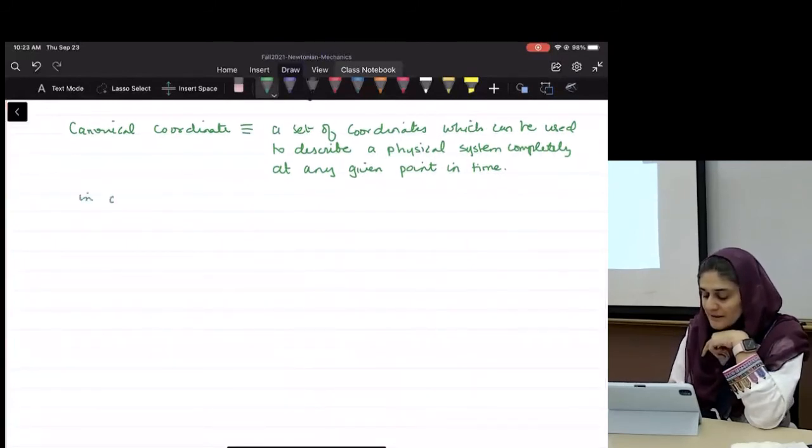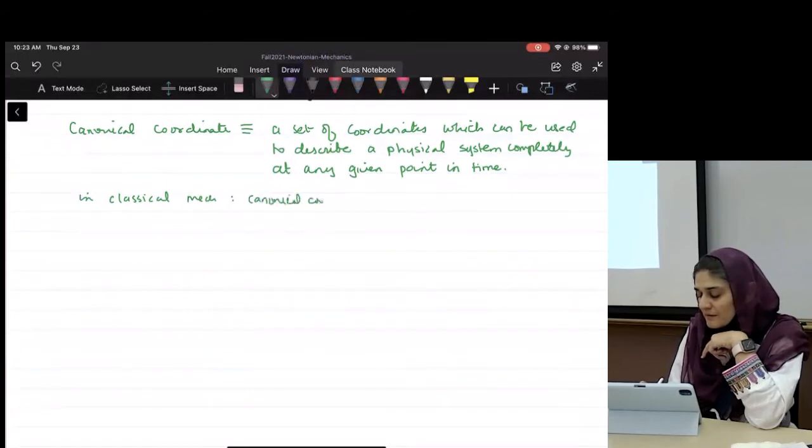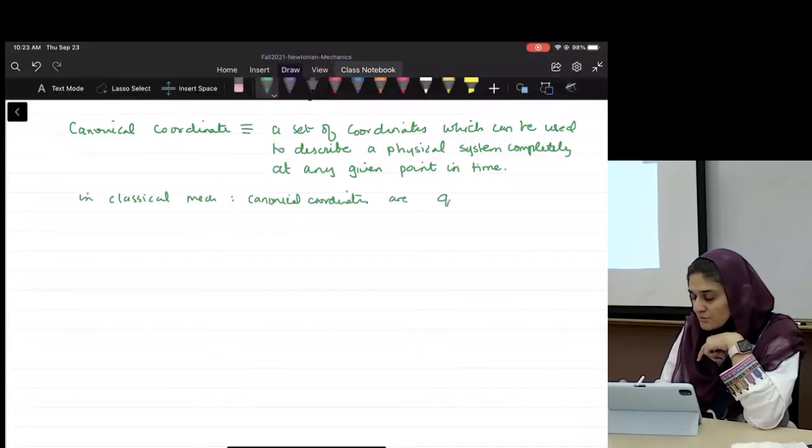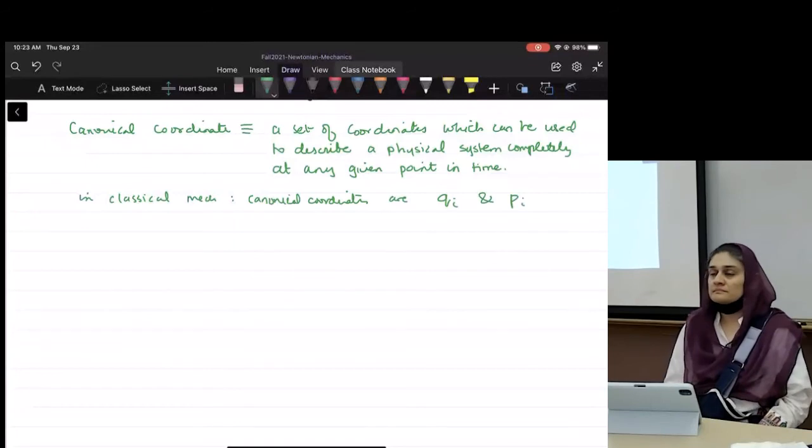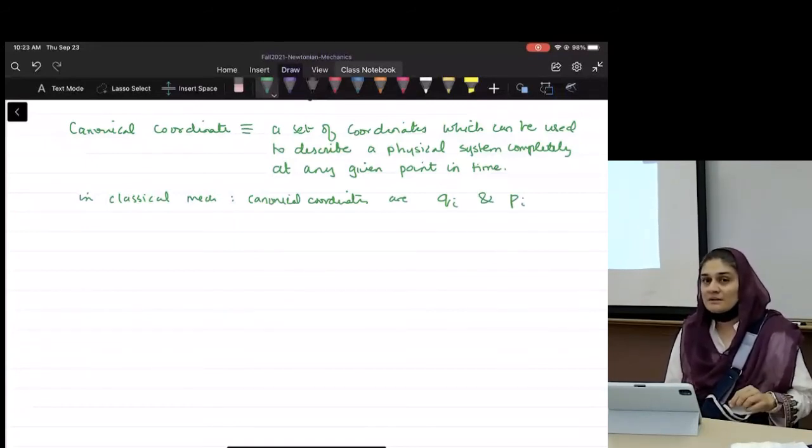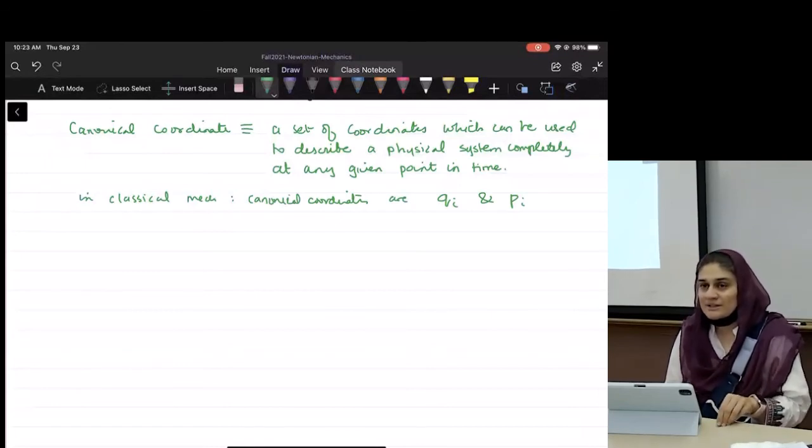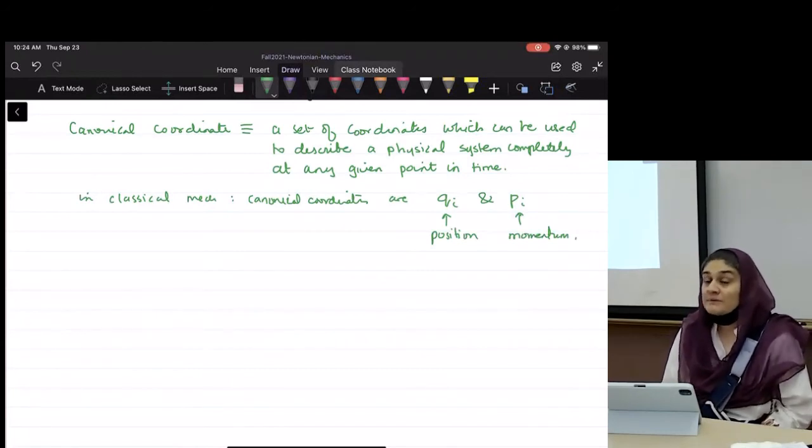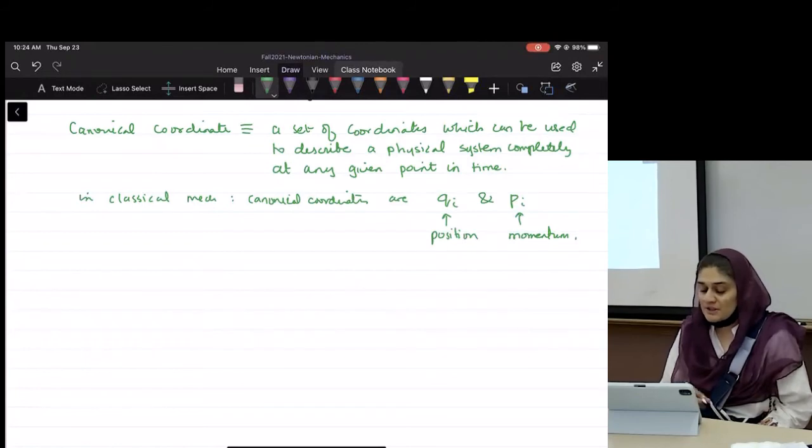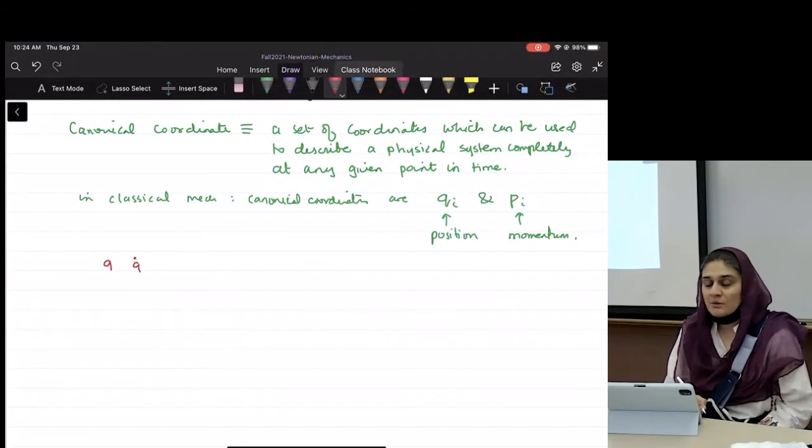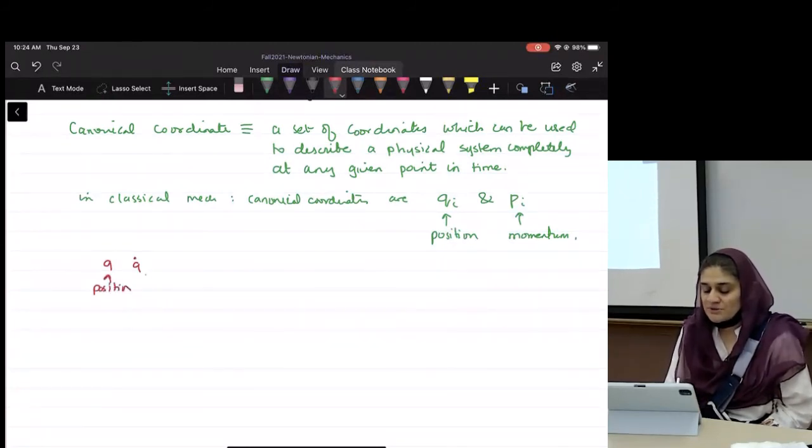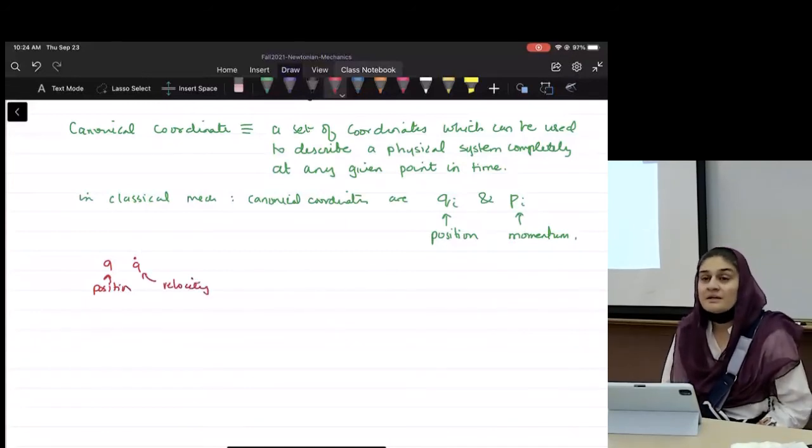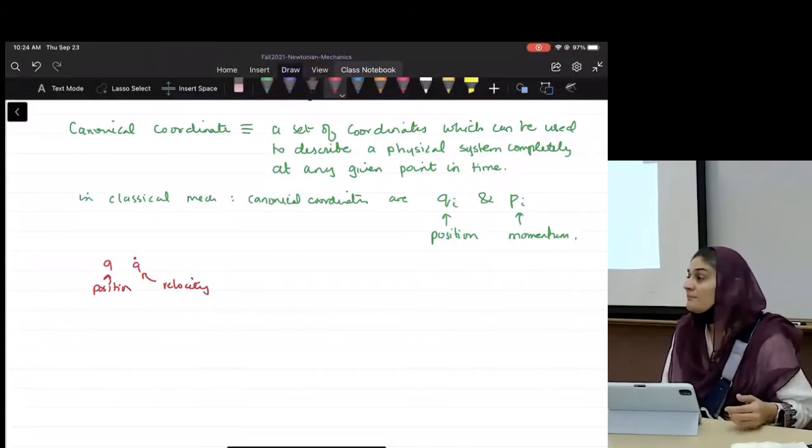So in classical mechanics, the canonical coordinates are q and p. We did q's the other day, right? We did q and q dot when we were talking about Lagrangians and we call them generalized coordinates. What was q? Position, very good. And what is p? Momentum. So for example, when we were doing Lagrangians, we talked about q and q dot, correct? What was q dot? Velocity. So Hamiltonian, instead of talking about velocities, he talked about momentum.